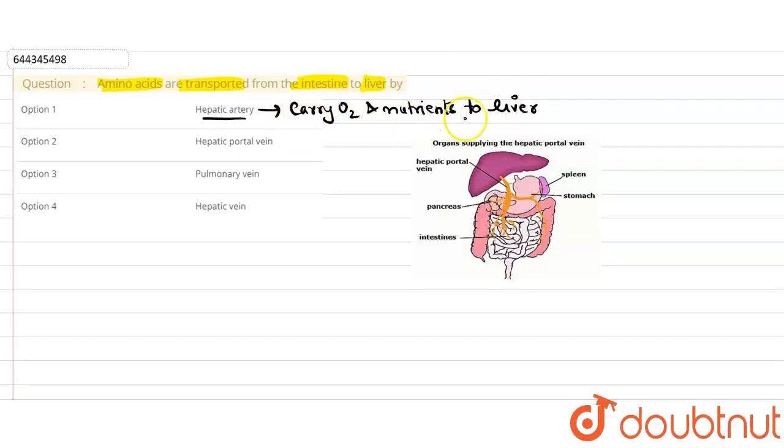Option two says hepatic portal vein. This is the major blood vessel major blood vessel connecting to the liver. We can say major blood vessel of liver which carries most of the oxygen and nutrients to the liver.